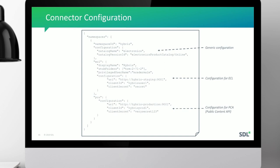Here's an example of a configuration passed into the add-on service with a few sections — each section can be specific for each application, in this case ECL and PCA (Public Content API). You can have different configurations for each — for ECL it might make sense to point to a staging Hybris instance, while on the delivery side you'd use a higher-performance endpoint. You can also have a generic configuration that's overridden by application-specific configurations.